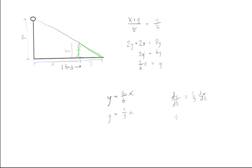We know what dx/dt is, so dy/dt = (1/3) times dx/dt, where dx/dt is 1.5 meters per second.